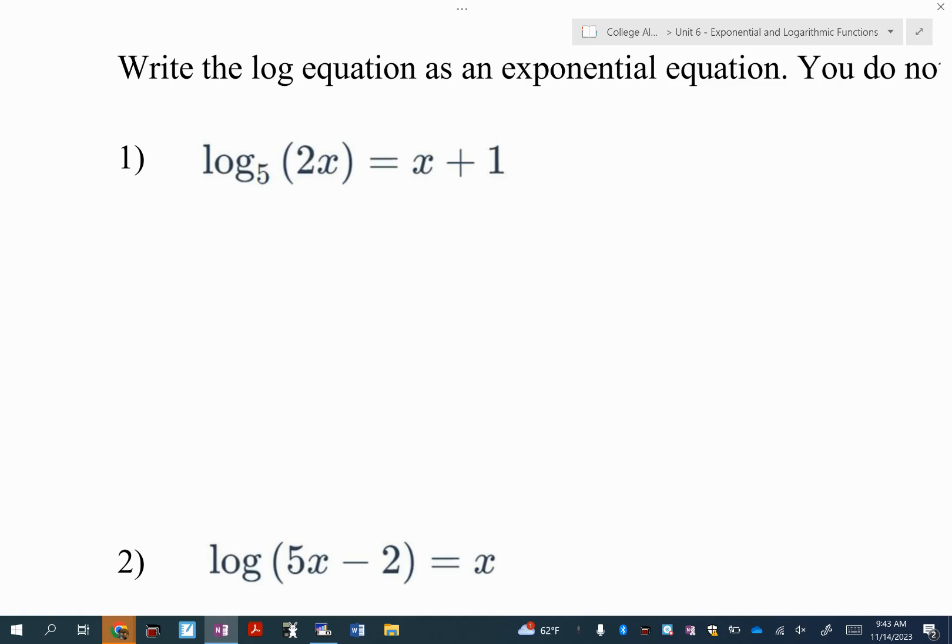So now, if I'm going to change that to an exponential equation, I'm going to do five to the x plus one power equals two x. So I'm going to write five to the x plus one power equals two x. And that's it, you're done. Everyone good on the first one?